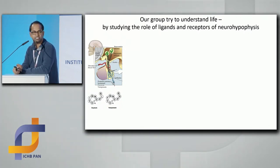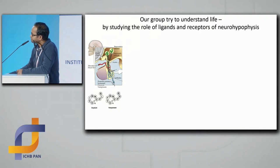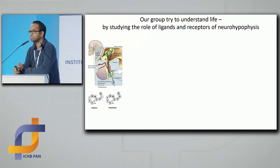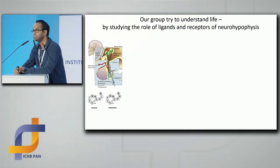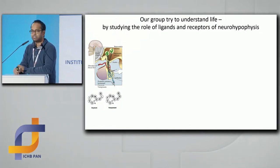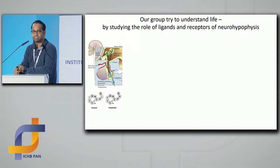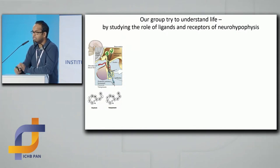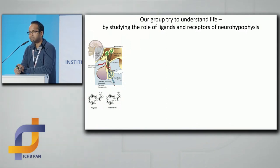The neurohypophysis — the posterior pituitary gland, though it's not really a gland. The two major neuropeptides released from this tissue are oxytocin and vasopressin. These are nonapeptides — nine amino acid cyclic peptides bound together by one disulfide bond.